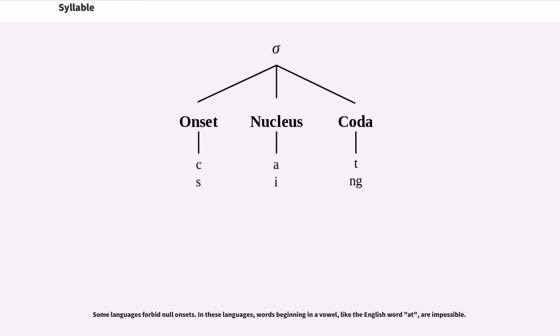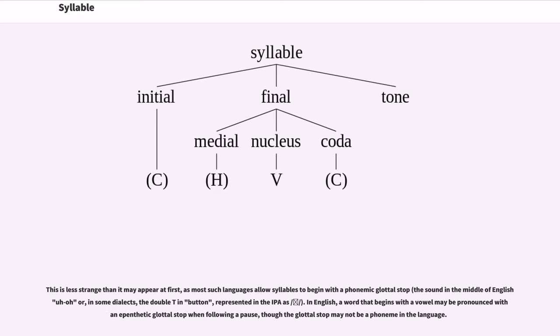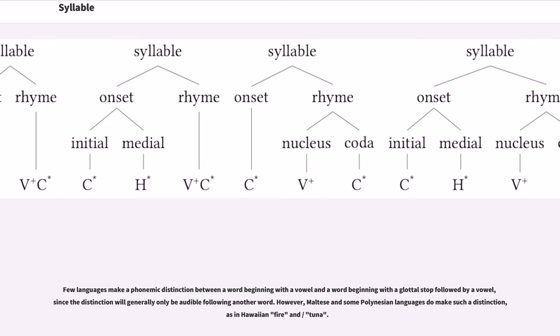Some languages forbid null onsets. In these languages, words beginning in a vowel, like the English word at, are impossible. This is less strange than it may appear at first, as most such languages allow syllables to begin with a phonemic glottal stop. In English, a word that begins with a vowel may be pronounced with an epenthetic glottal stop when following a pause, though the glottal stop may not be a phoneme in the language. Few languages make a phonemic distinction between a word beginning with a vowel and a word beginning with a glottal stop followed by a vowel, since the distinction will generally only be audible following another word. However, Maltese and some Polynesian languages do make such a distinction, as in Hawaiian fire and tuna.